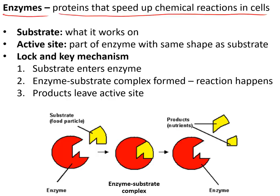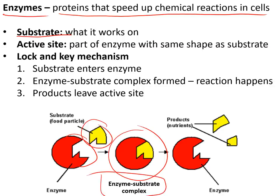Enzymes are proteins found inside every cell and they speed up chemical reactions. They work on the substrate — a chemical with a specific shape that the enzyme works on. The substrate fits into part of the enzyme called the active site, which has the matching shape for the substrate. The substrate goes into the active site forming an enzyme-substrate complex.